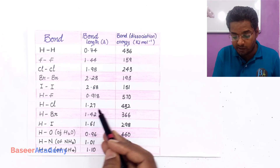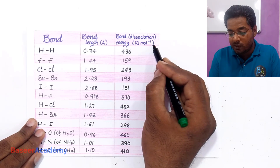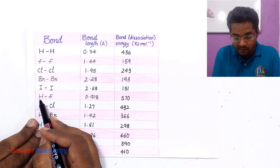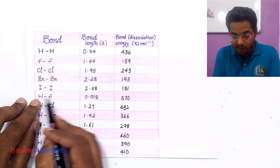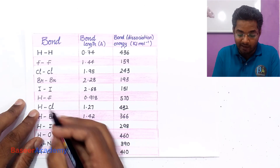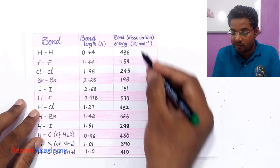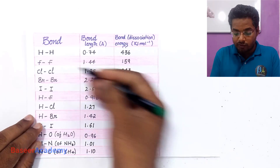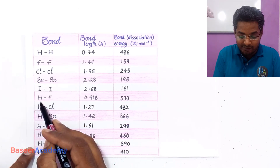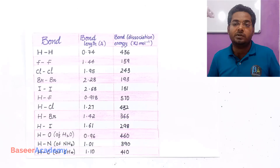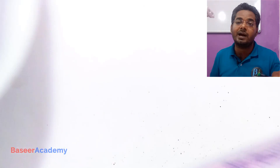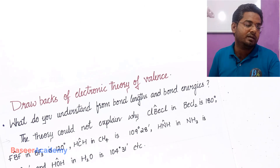Bond energy is expressed in kilojoule per mole. The hydrogen–hydrogen bond energy is 436 kJ/mol, the hydrogen–fluorine bond energy is 570 kJ/mol, and when hydrogen combines with chlorine the energy required to break that bond is 432 kJ/mol. So we see that bond length and bond energy change when the atoms involved in bonding are different — that is the first drawback of electronic theory of valence.